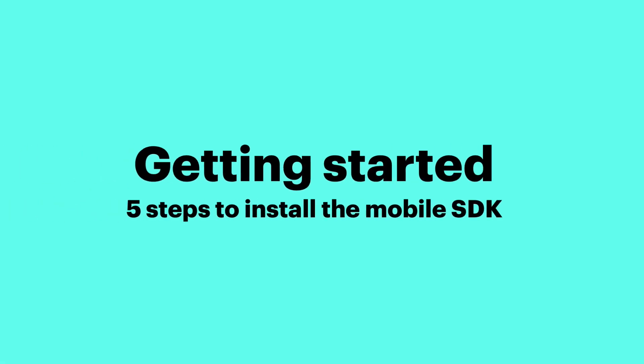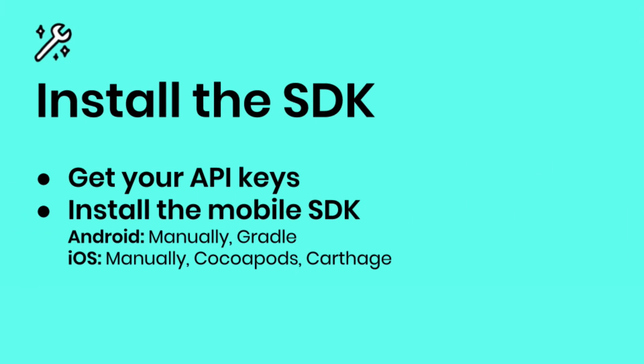Now it's time to get technical. Let's go over five things you'll want to think about when you're installing the Intercom mobile SDK. First up, head to your settings inside Intercom and copy your API keys for Android and iOS. When you install the mobile SDK, you'll need these to initialize the connection between your app and Intercom.